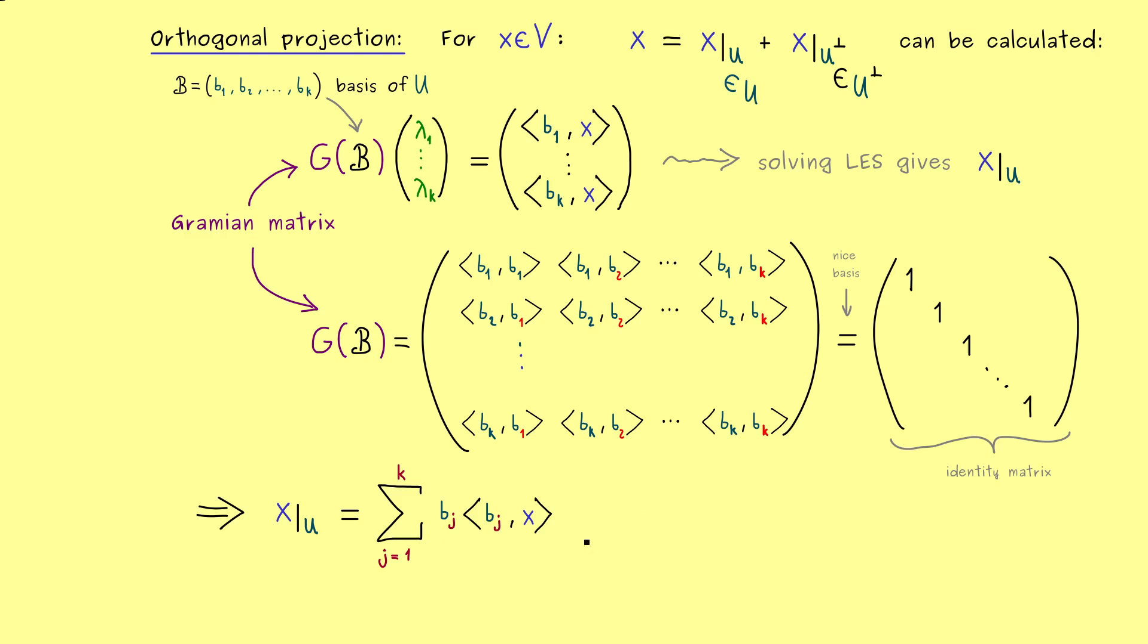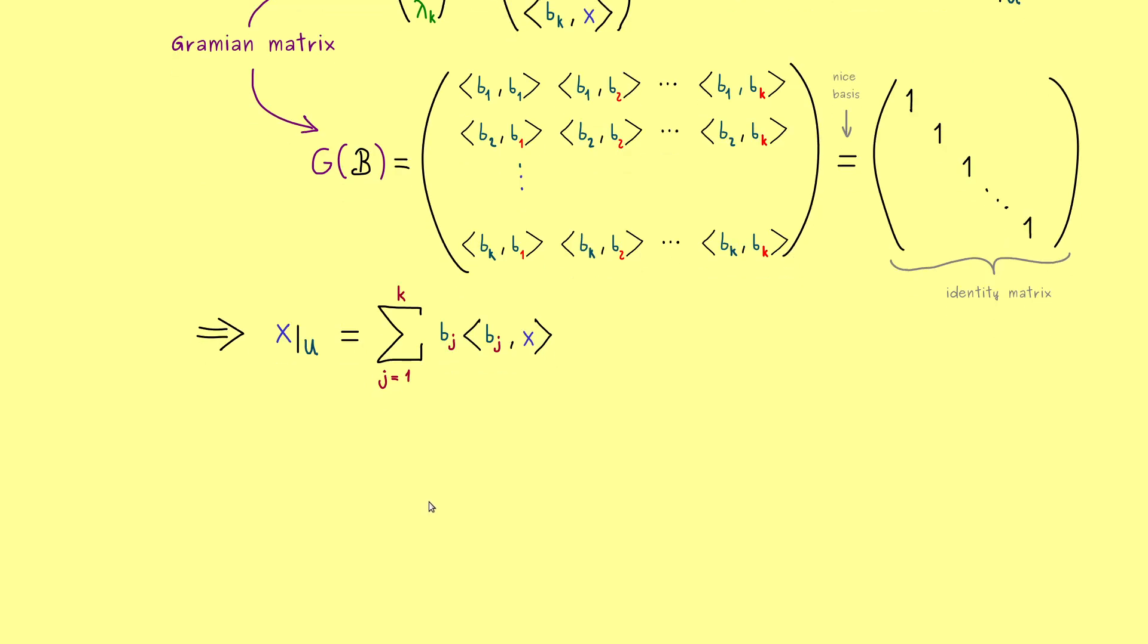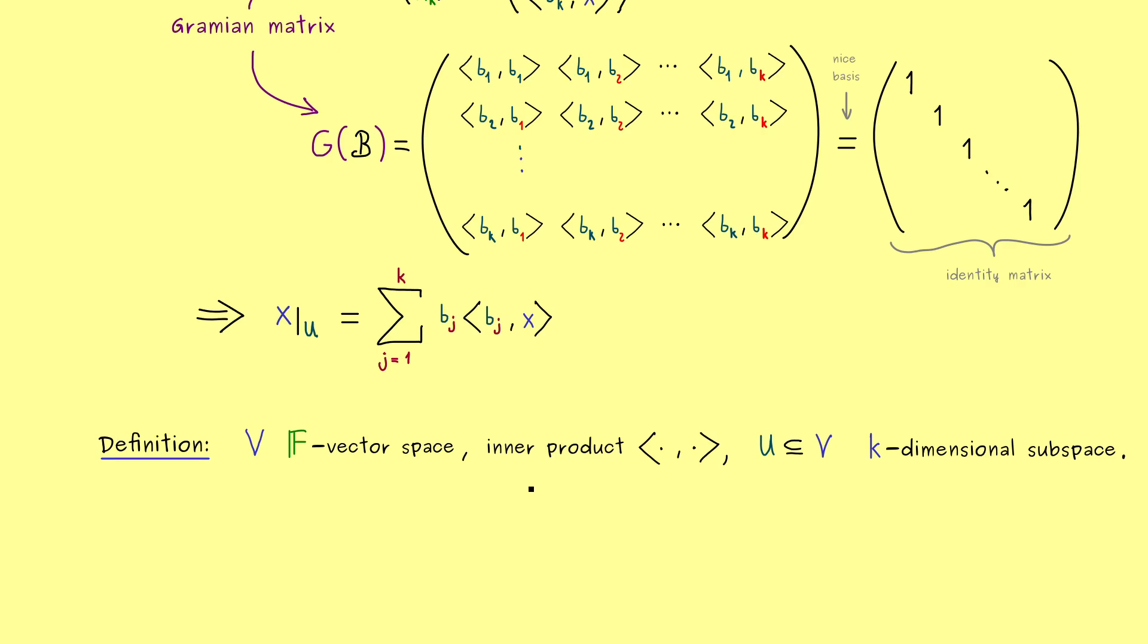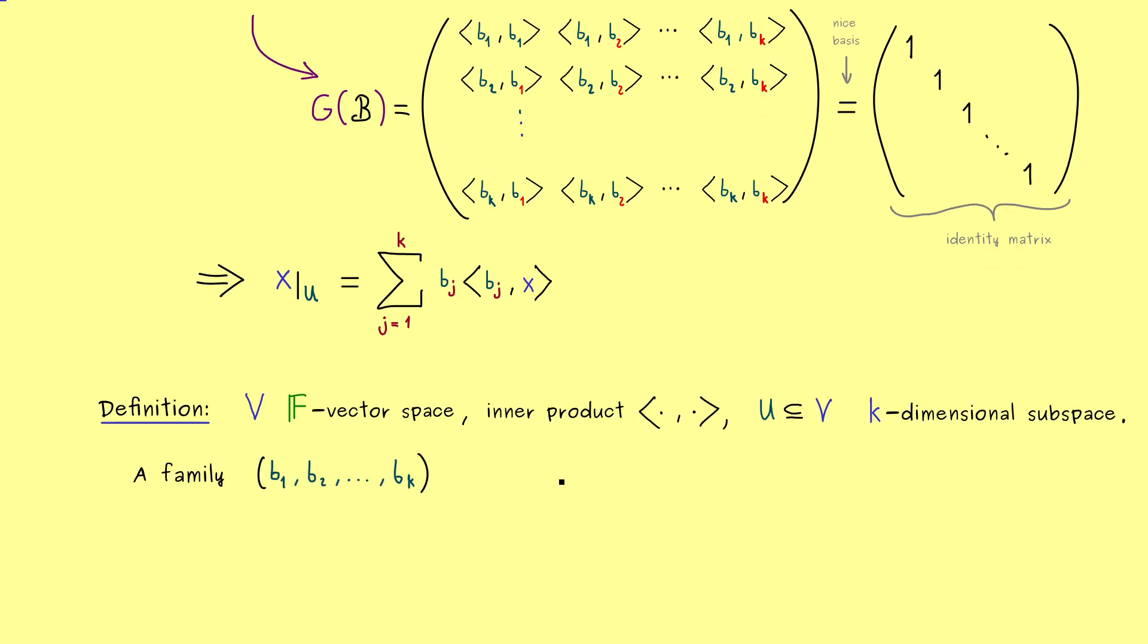However it only holds for such a nice basis and now we will call it an orthonormal basis. Therefore this will be the content of the next definition. It's a very general definition, because we only need a vector space with an inner product. However, still, because we do linear algebra, I want to formulate everything for a finite dimensional subspace. One can generalize that for infinite dimensional subspaces, but this is a content for another video. So here we just take a family of vectors from the subspace U. And as before, let's simply call them bⱼ again. And then we have different names for this family, depending what it fulfills.